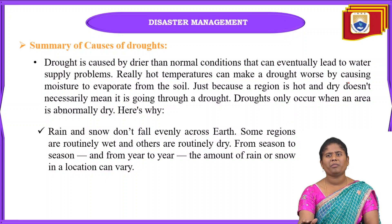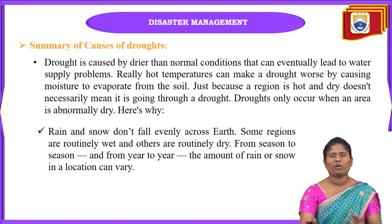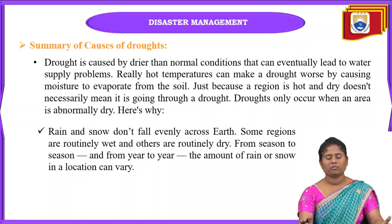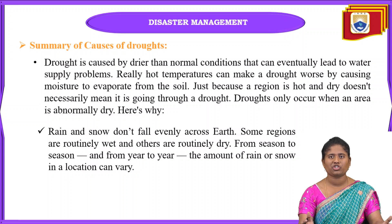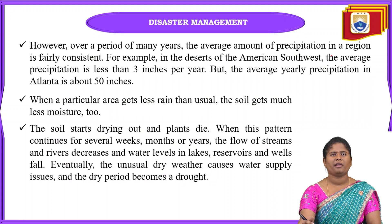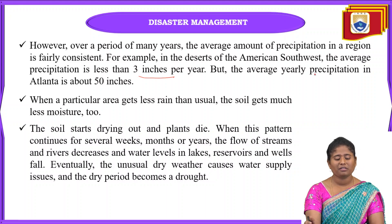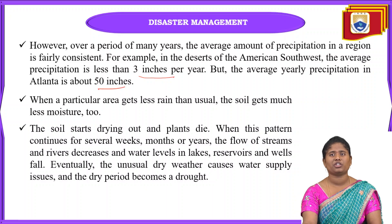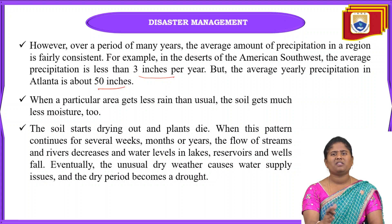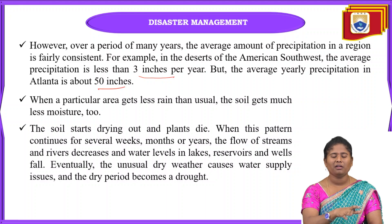Rainfall can vary season to season and year to year. In some seasons, rainfall may be less, while in others it may be higher due to changing climatic conditions and the greenhouse gas effect. Comparing previous years, some areas may have only 3 inches of precipitation while others, like Atlanta, may have 50 inches, and the same area can vary significantly from year to year.